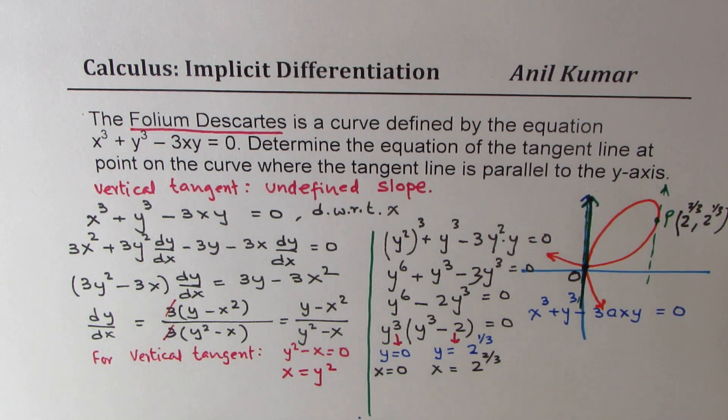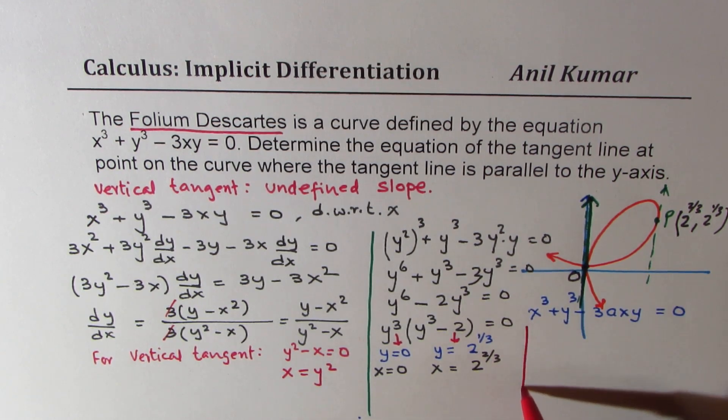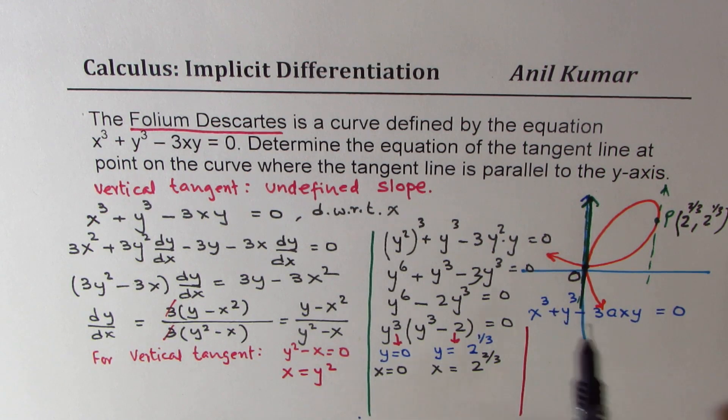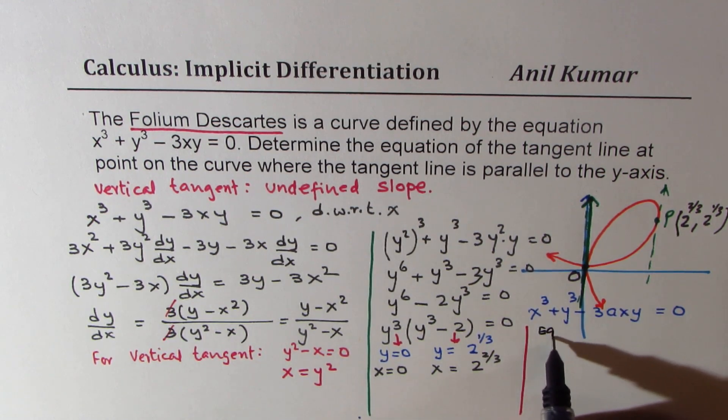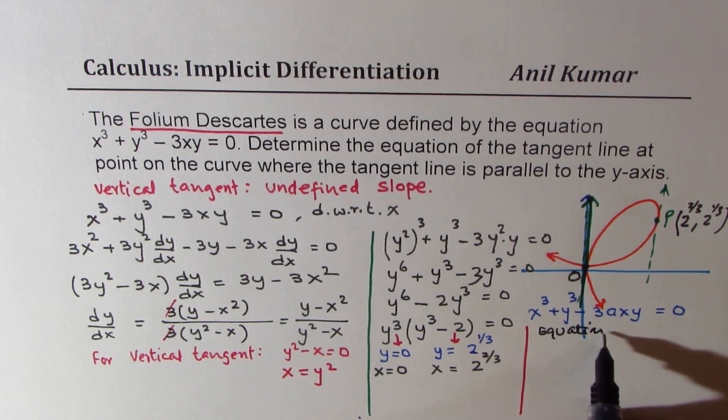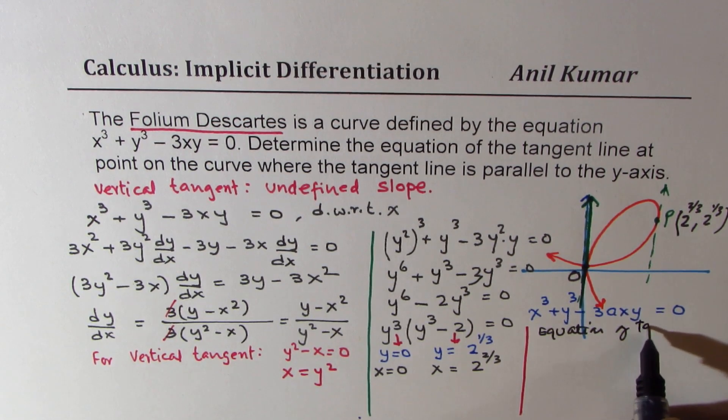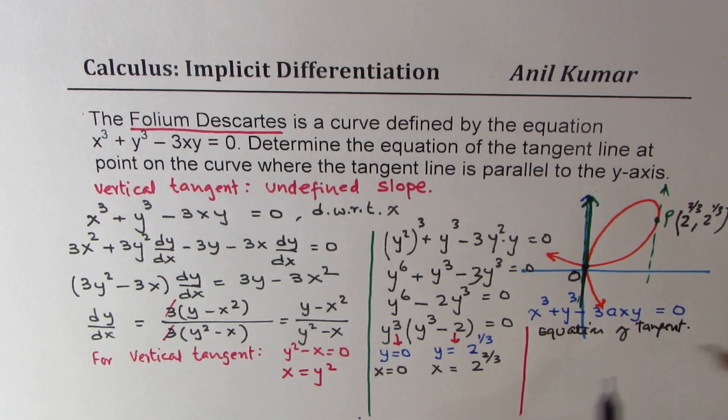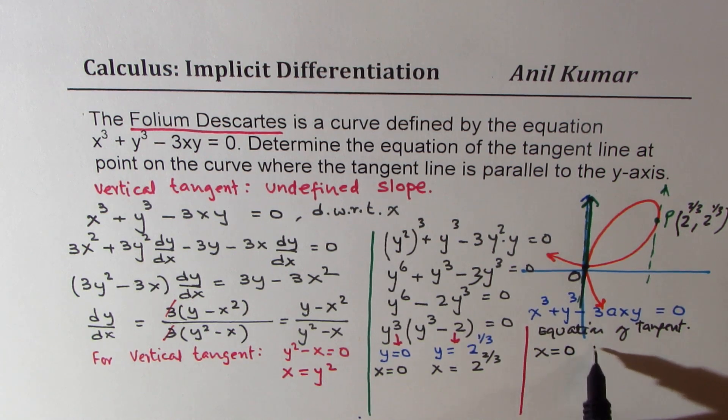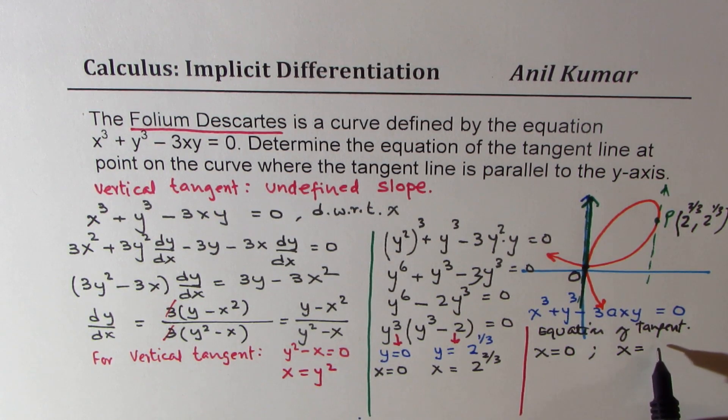So the vertical line will be given as what? So what is the equation of tangent? So from here, we get equation of tangent, as, since they are vertical lines, x equal to 0, that's the first equation, the second one is x equals 2 to the power of 2 over 3.